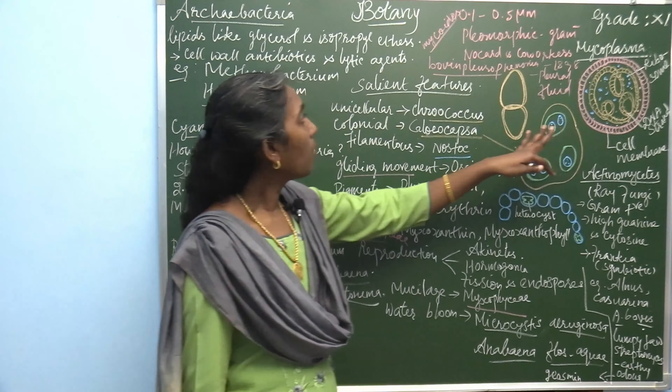Actinomyces are commonly called ray fungi. They are gram-positive bacteria containing high guanine and high cytosine. They show symbiotic relationships; Frankia makes a symbiotic relationship with Alnus and Casuarina. Actinomyces bovis causes lumpy jaw, and Streptomyces species cause earthy odor.